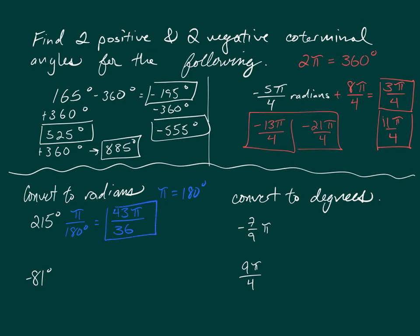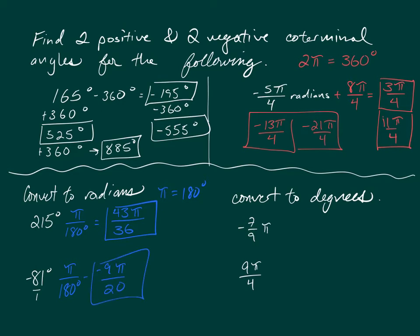That fraction cannot be simplified further. For the second conversion — negative 81 degrees — multiply by π over 180 degrees. The degrees units cancel, leaving radians. Simplify 81 over 180 by dividing both by 9, giving negative 9π/20, which cannot be simplified further.